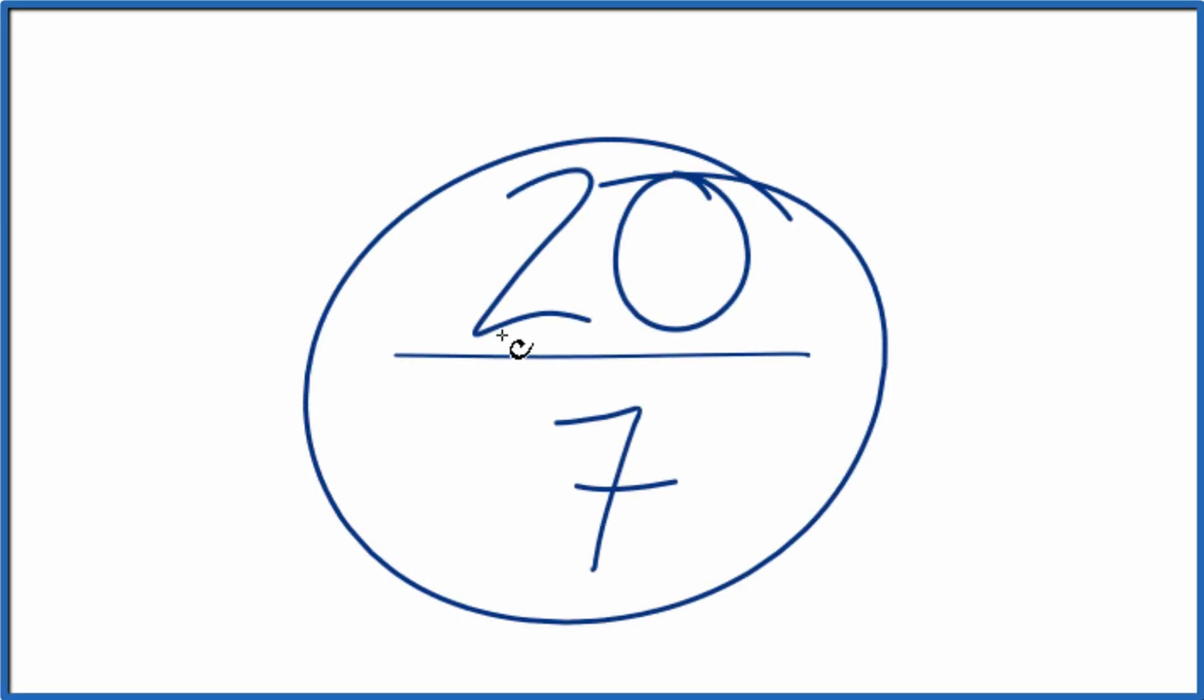Let's simplify the fraction 20/7 and write it as a mixed number. So to start with, what we're trying to do is find another fraction that's equivalent to 20 divided by 7, just that it's in lowest terms.